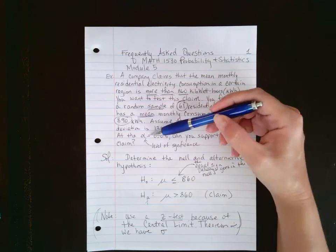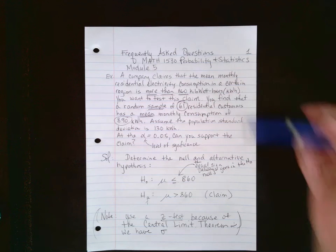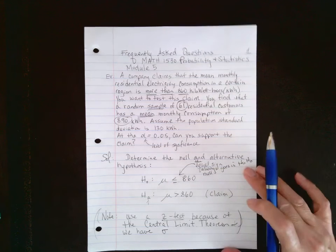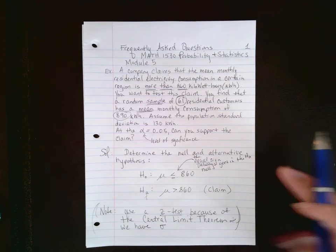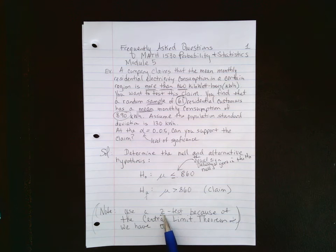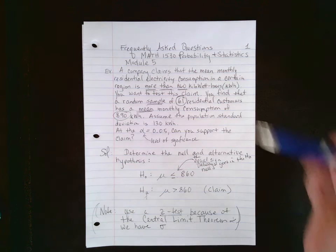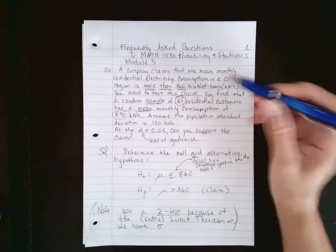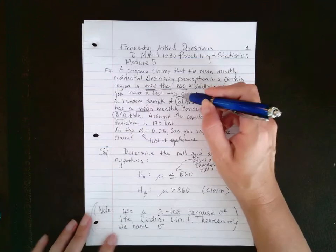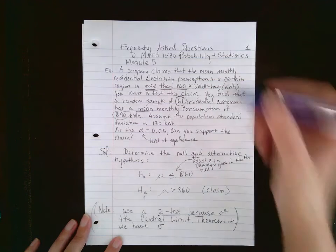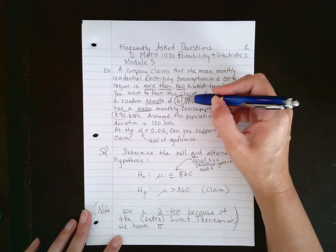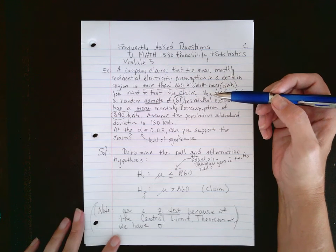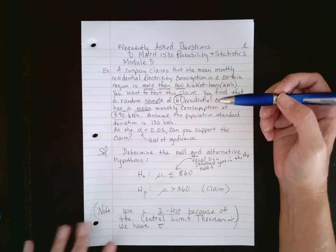The level of significance is the alpha level. Before we get started setting up the null and alternative hypothesis, I want to mention what type of test we're going to use. We're going to use the z-test because we're given the population standard deviation and our sample size is large enough to satisfy the central limit theorem. The central limit theorem says if you have a sample size larger than 30, then the distribution of the sample mean will be approximately normal, so we can use the normal bell curve.